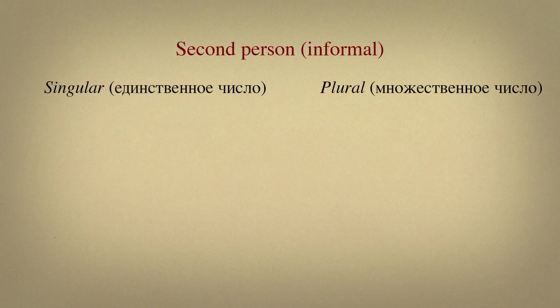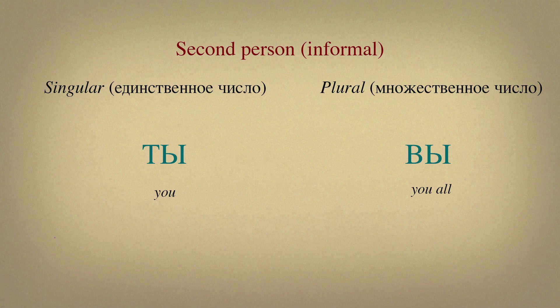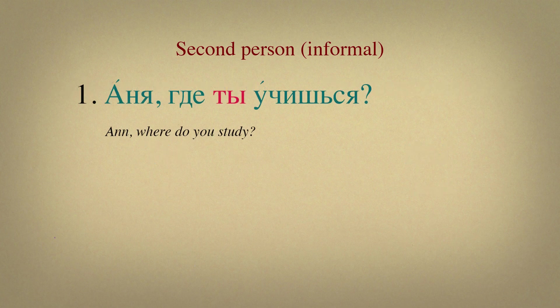Let's move on with the personal pronouns of second person. The situation when we talk to the second person can be either formal or informal. First, let's see pronouns which are used in informal situations. If you are talking to one person, you would use ты. If you are talking to more than one person, you would use вы. Now let's see how you can use each of these pronouns. Аня, где ты учишься?